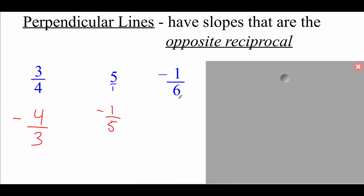If we had the fraction negative one-sixth, to do the opposite reciprocal, the first thing we do is flip that fraction over so the six ends up on top and the one ends up on bottom. We started with a negative number, so if we want the opposite, then we want our answer to be a positive number.